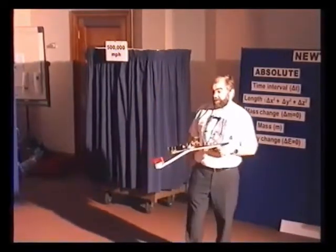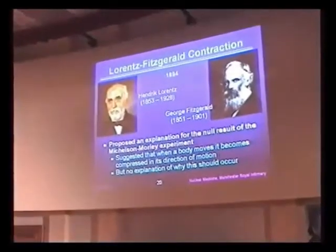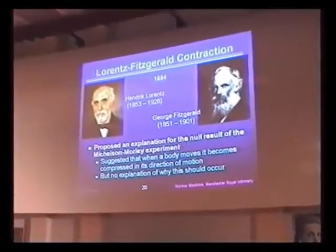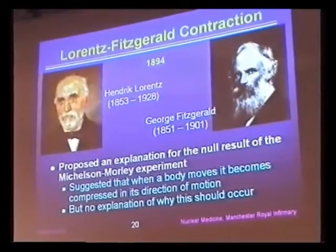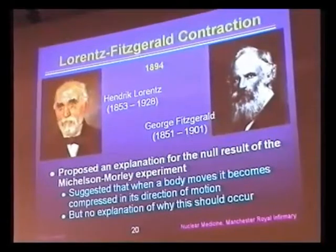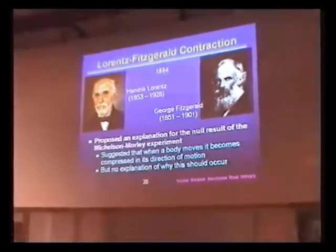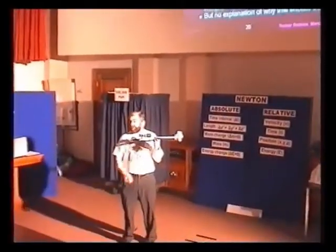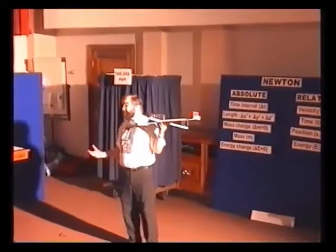Now, in 1894, Lorentz and Fitzgerald independently suggested an explanation of this result. They said that if the bar, which was moving along through the ether, contracted, it would account for the fact that there was no result from the Michelson-Morley experiment. And they calculated exactly how much contraction would be needed to explain the fact that the fringes didn't move. But they had no explanation of why that should occur.